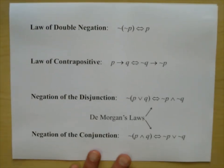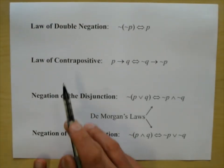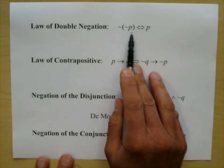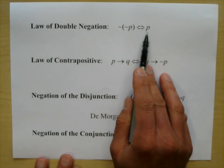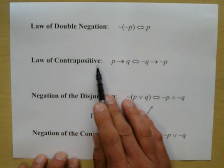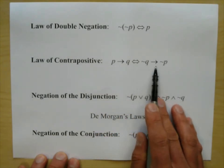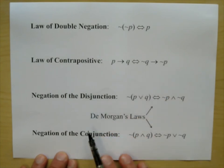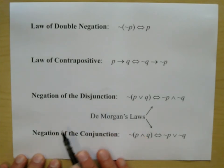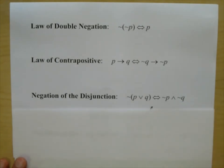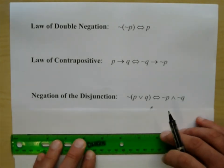Here's a summary. We have the law of double negation: negation negation P is logically equivalent to P. We have the law of contrapositive: if P then Q is equivalent to if not Q then not P. Now here are some new ones: the negation of the disjunction and the negation of the conjunction.